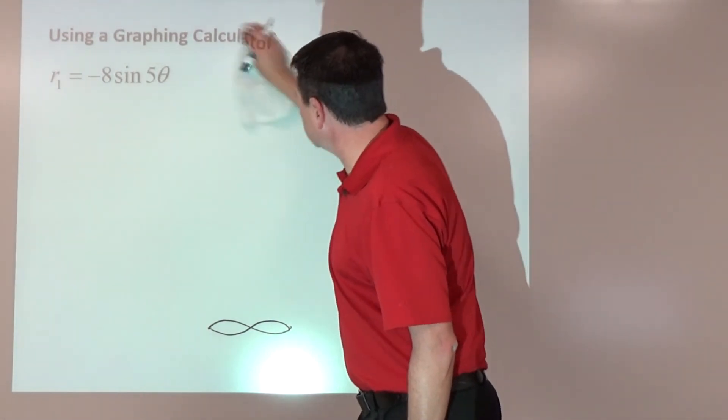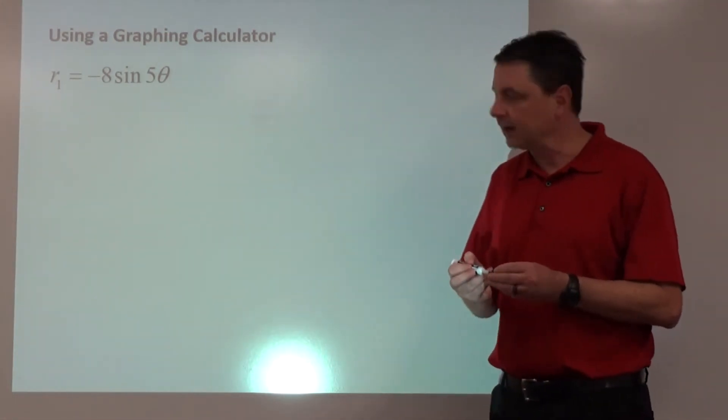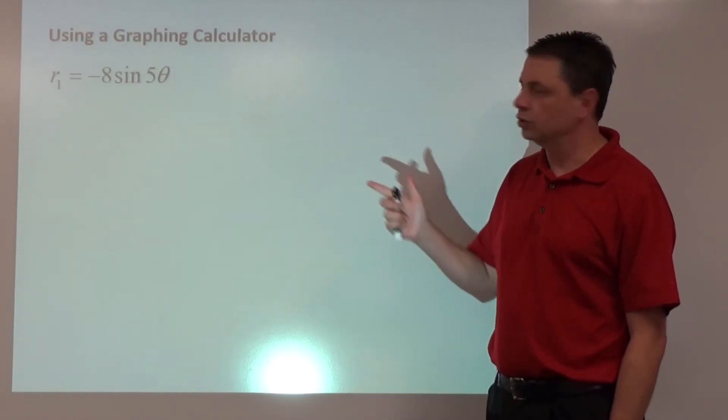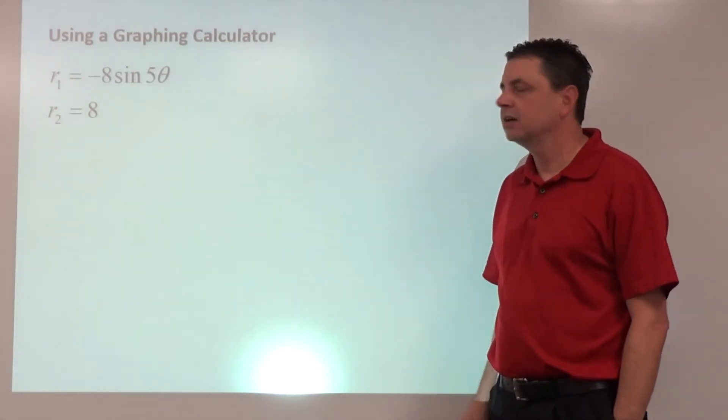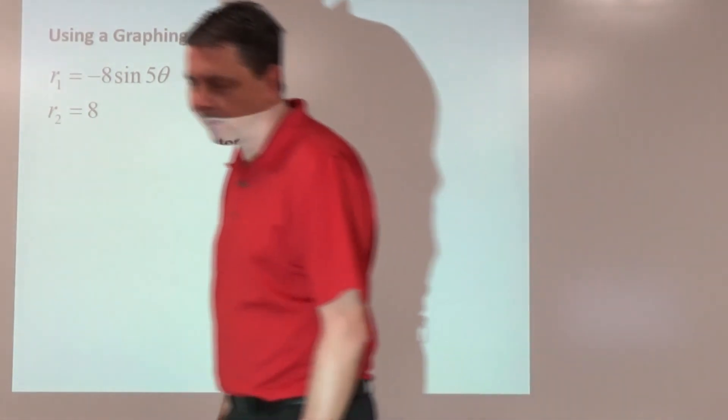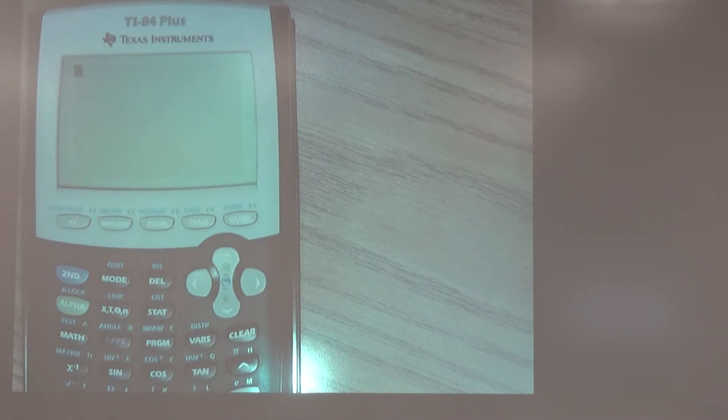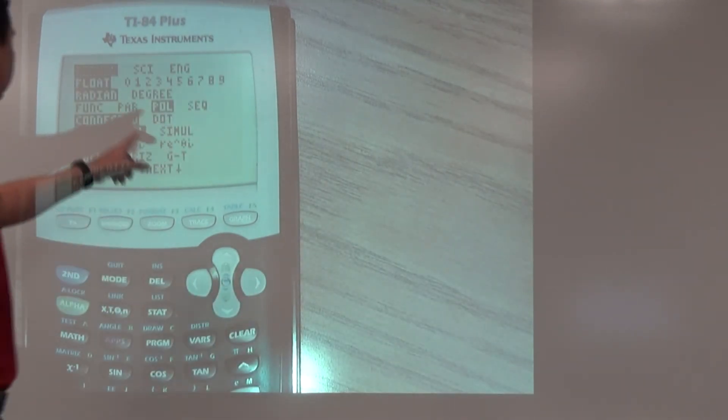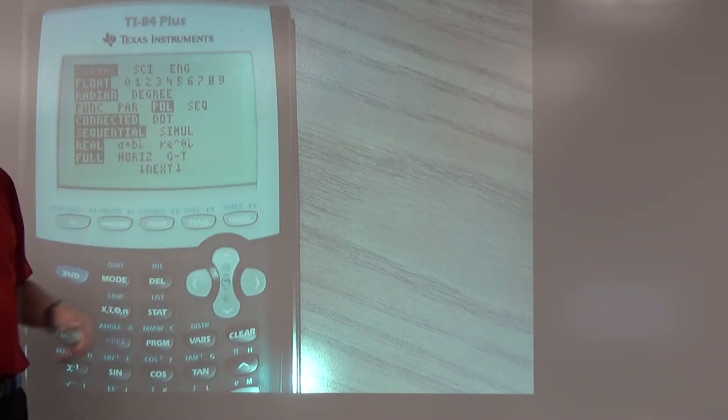Let's see about using a graphing calculator to do some polar graphs. We're going to do two at the same time here, r1 and r2. We've got our functions, so we're going to head over to the graphing calculator. We're going to go to mode first, press mode. We're going to make sure that we're in radians, and then we're going to choose polar, P-O-L, not function, not parametric, P-O-L for polar.